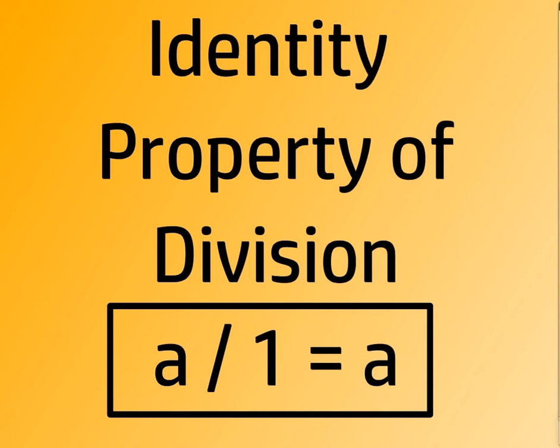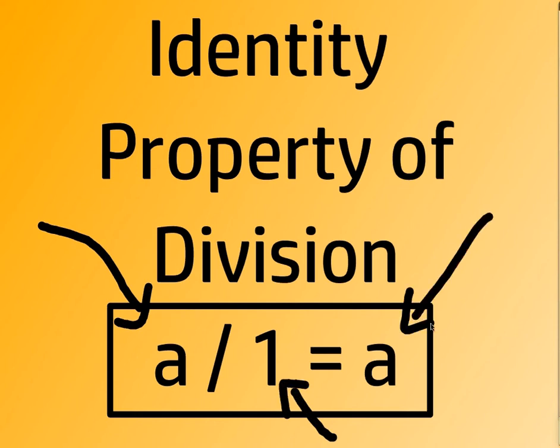In essence, what it means is, if you have a number, say 9, 10, 2/3, all the examples we just looked at, negative 100. What number must you divide by to end up with the same number? And the answer is 1. The only number you can divide by to end up with the same number is 1. So A divided by 1, A being any number, is equal to A.